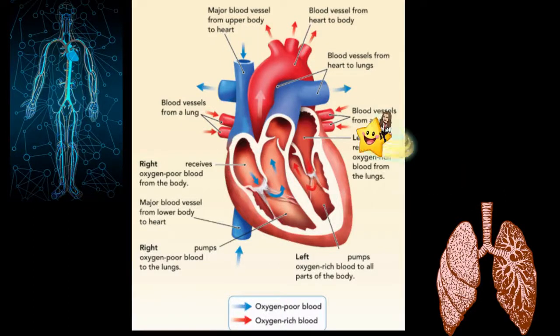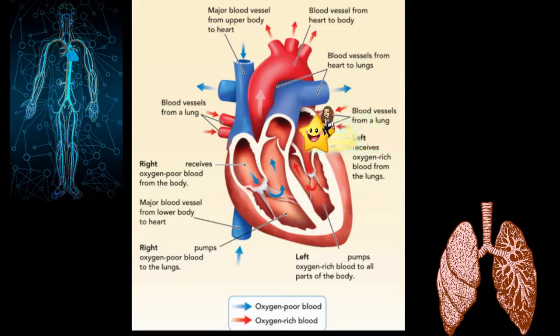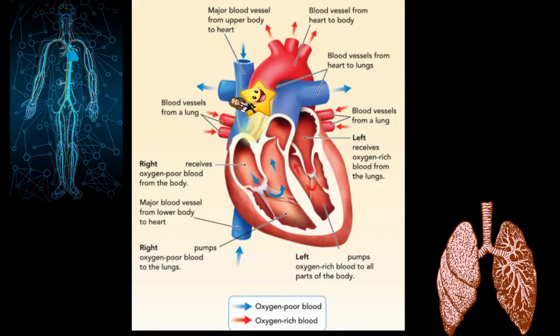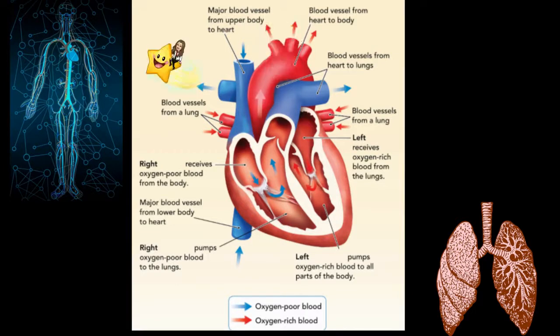Blood travels from the lungs to the left atrium, down to the left ventricle. It then takes nutrients and oxygen to the cells of the body, where it picks up waste products such as carbon dioxide.